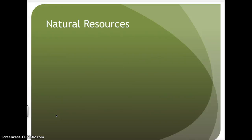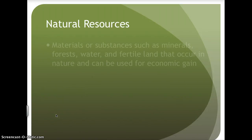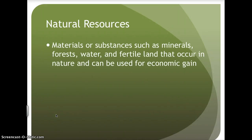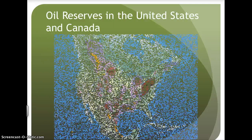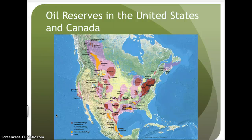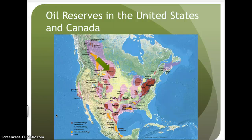The last factor affecting where people live is natural resources, which are materials or substances such as minerals, forests, water, and fertile land that occur in nature and can be used for economic gain. We are going to look at four. First, let's look at oil reserves in the United States and Canada. Looking at a map of the oil reserves, one thing you might notice is the Bakken shale play, located in North Dakota. The Bakken shale play has driven a lot of economic growth in North Dakota and increased settlement due to the successful oil industry.